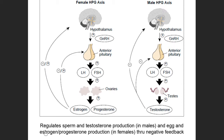This relationship demonstrates the brain's way — specifically certain structures in the brain — of communicating with the gonads in both males and females. In males, it controls production of testosterone and sperm. In females, it regulates production of estrogen and progesterone, as well as the development of female eggs.